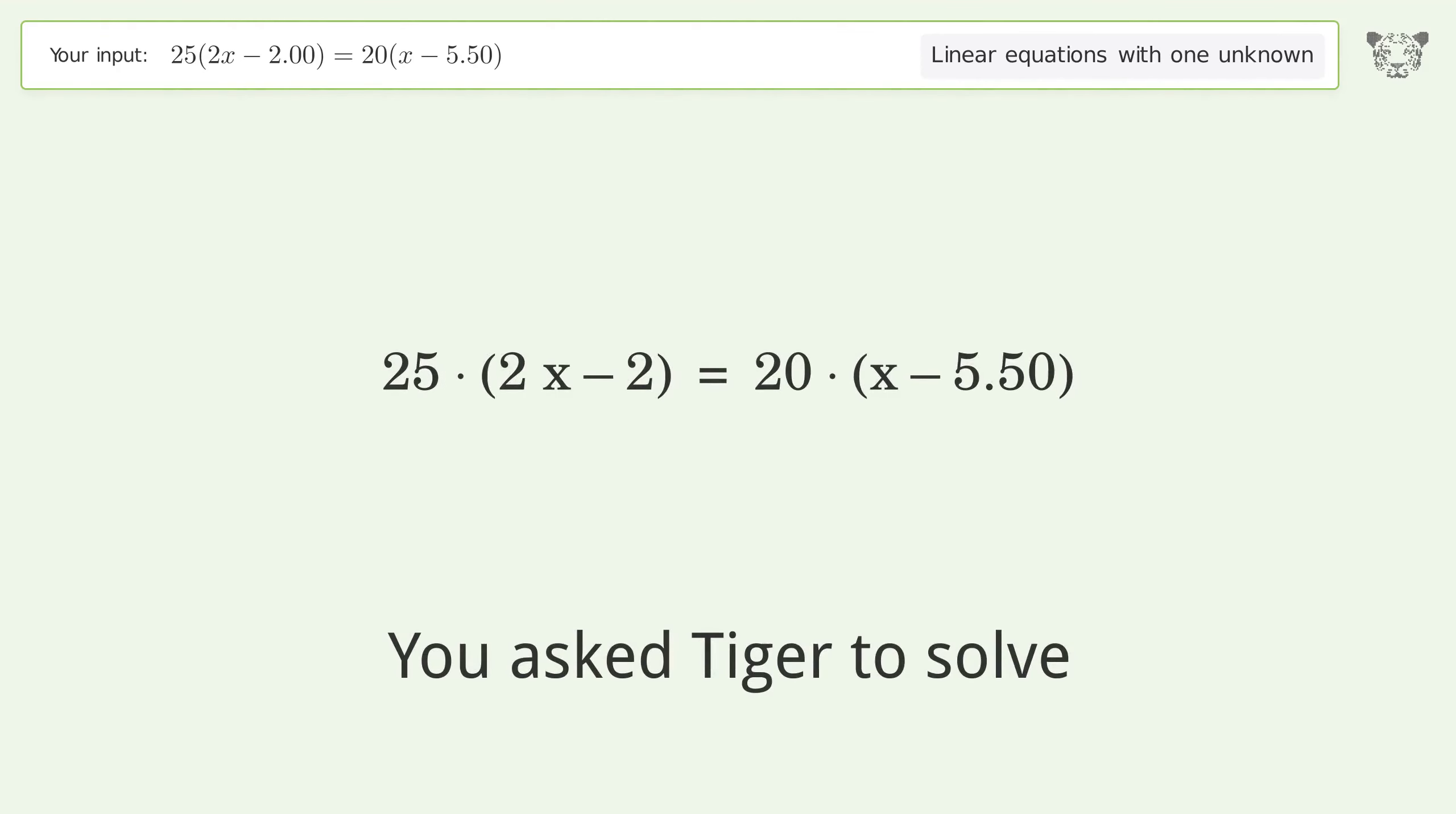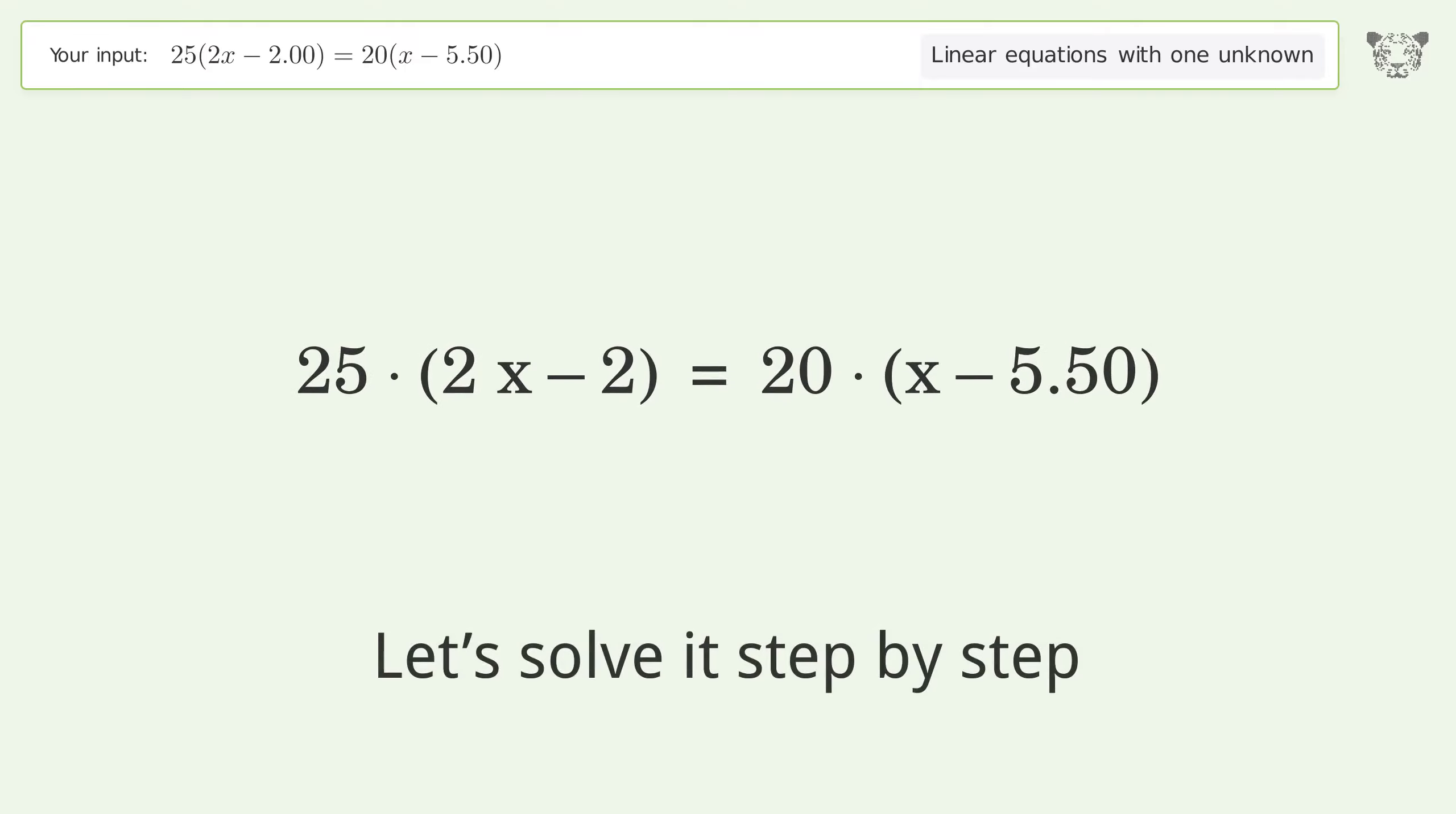You asked Tiger to solve this linear equation with one unknown. The final result is x equals negative 2. Let's solve it step by step, simplifying the expression.